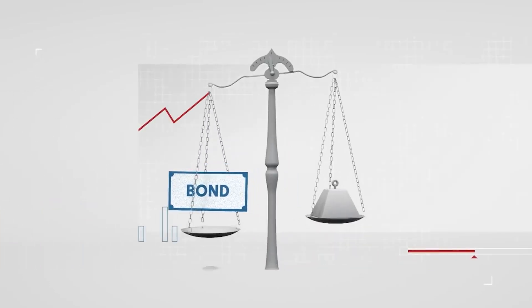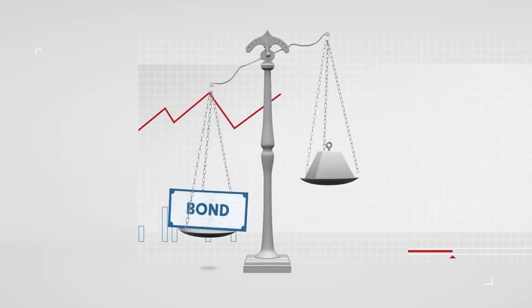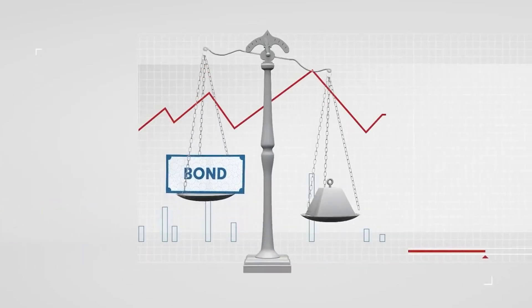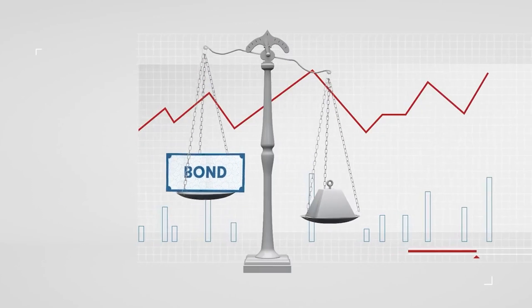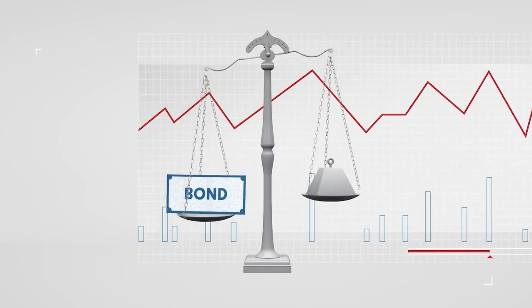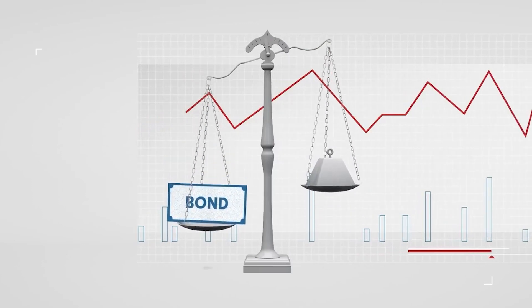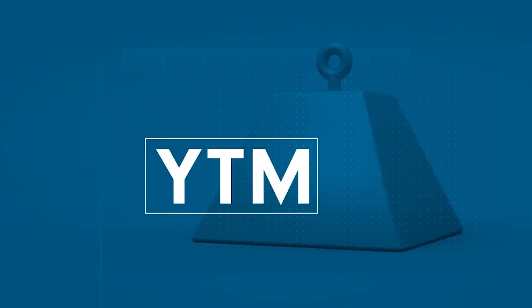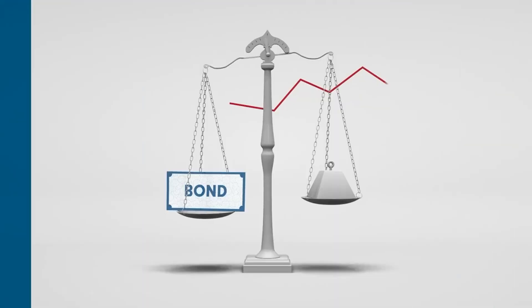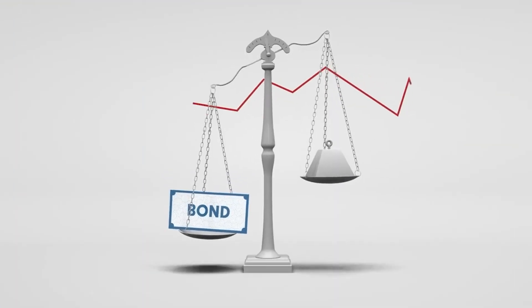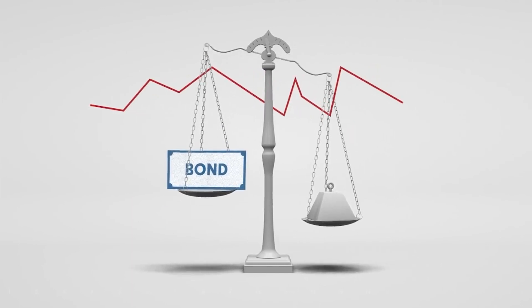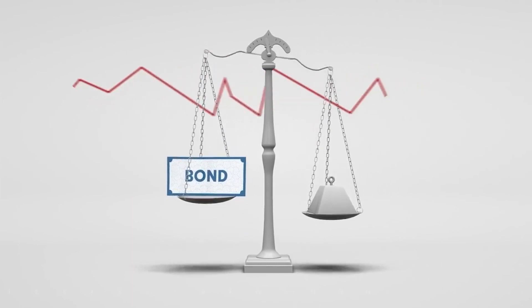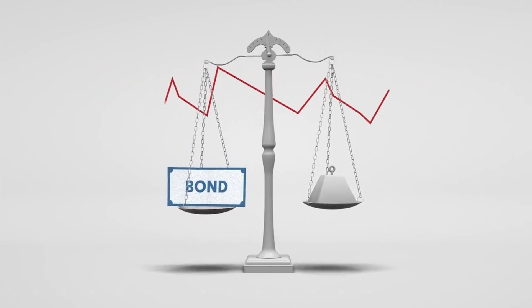However, bond prices are decided by the market and will fluctuate due to changes in credit ratings, and current and future interest rates. Yield to maturity, or YTM, measures a bond's rate of return when buying it at different times when the price may vary from the original par value.